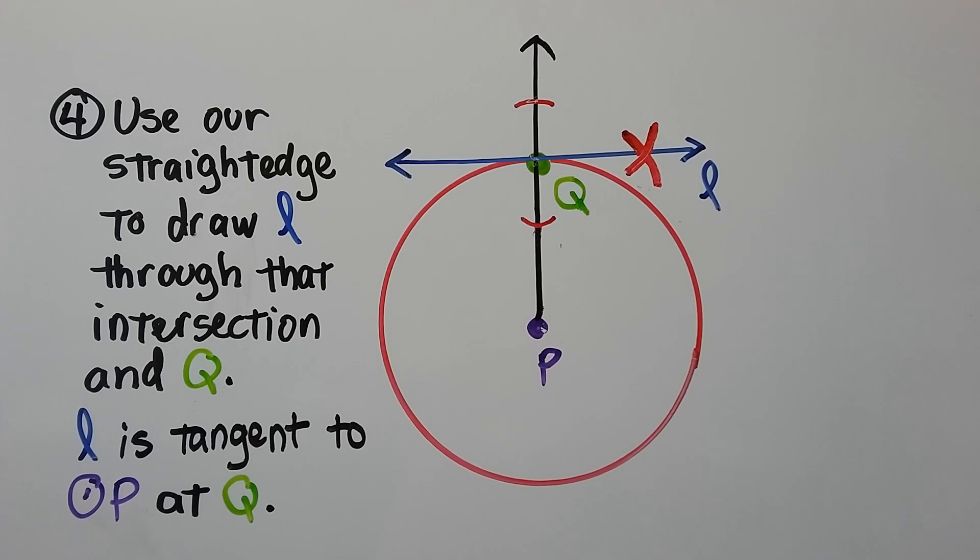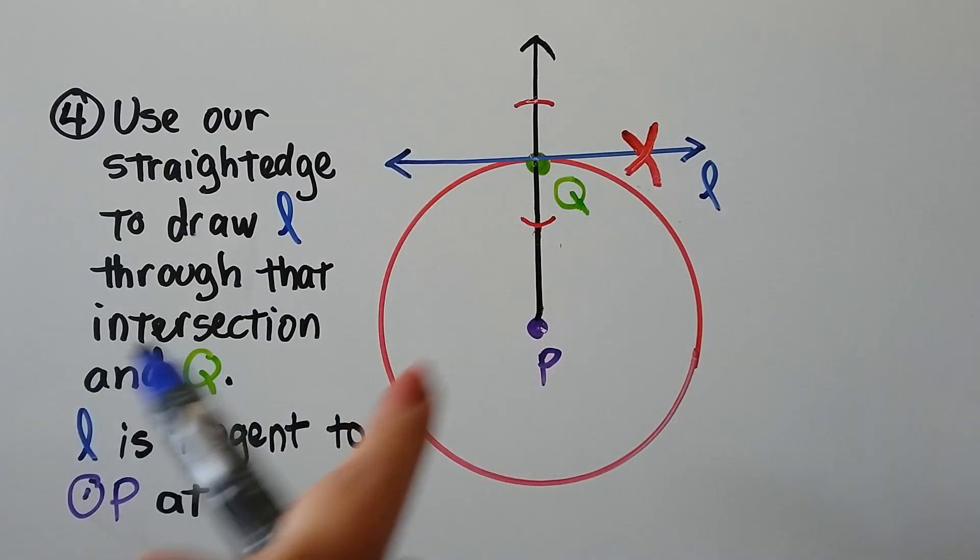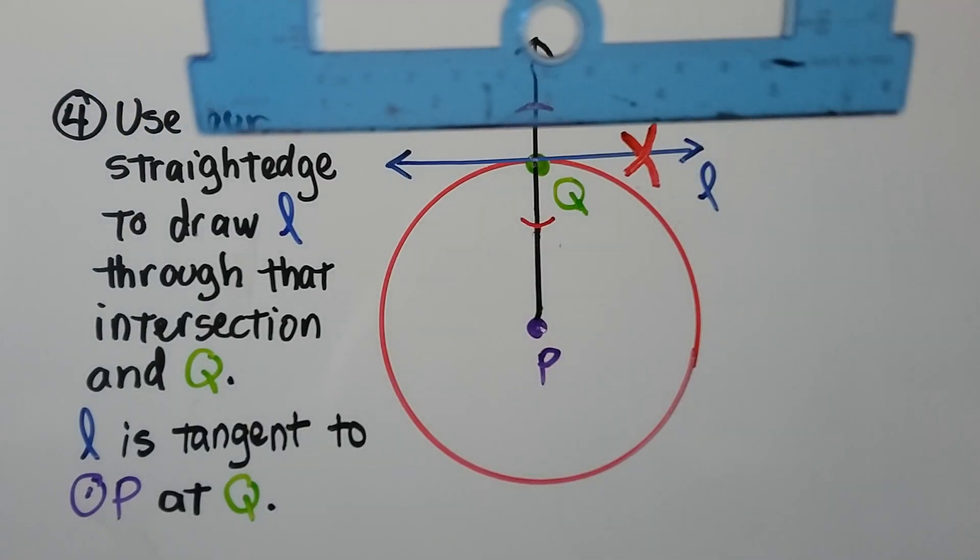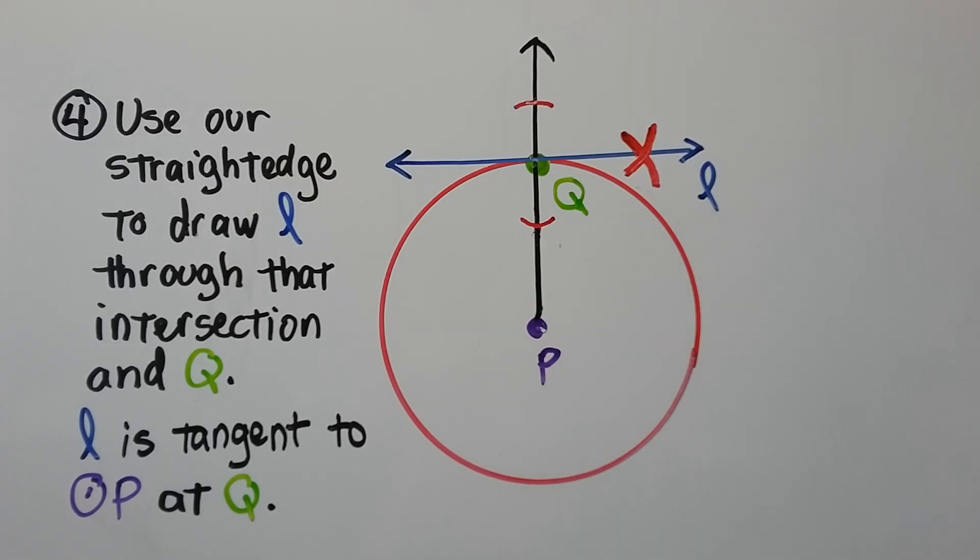And I'm sure some of you have figured out by now, if we use our straight edge to draw line L through that intersection that we made and point Q, we now have L, which is tangent to circle P at Q.